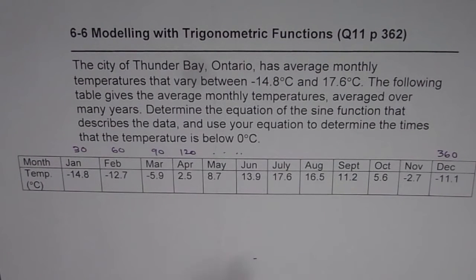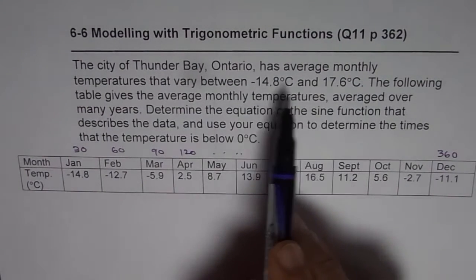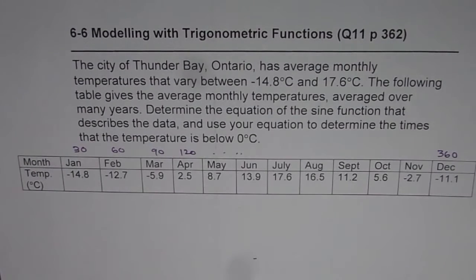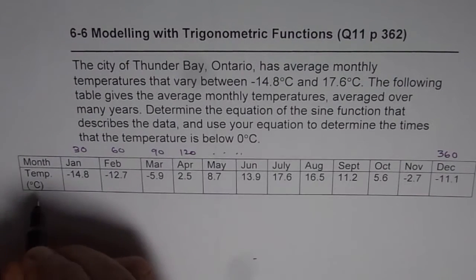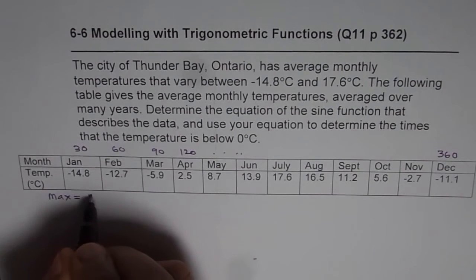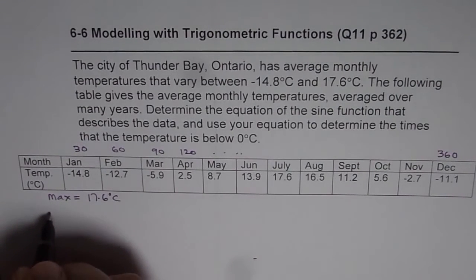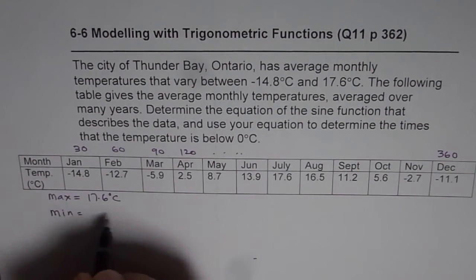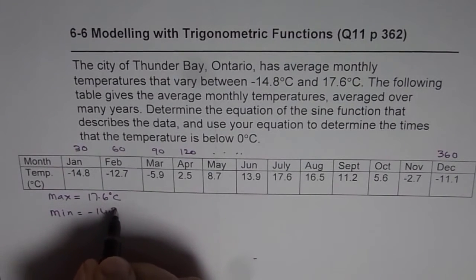Now that's one thing. Second thing is, maximum and minimum values will actually give you the amplitude and the phase shift. So let's start with the minimum value and maximum value. So maximum value for us is 17.6 degrees centigrade. Minimum is minus 14.8 degrees centigrade. Now this maximum and minimum value will give you amplitude and the phase shift.